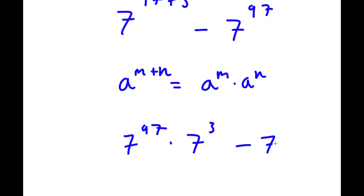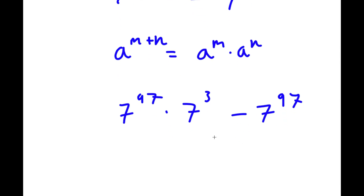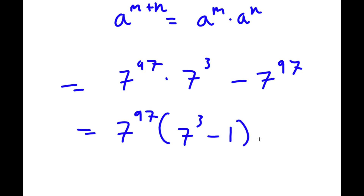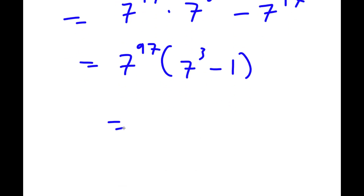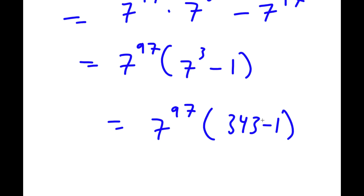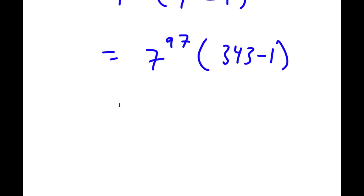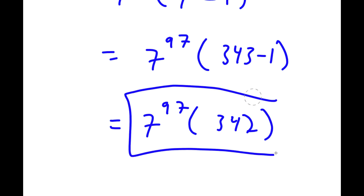Now I have this minus 7 to the power of 97. If I factor out 7 to the power of 97, I get 7 to the power of 97 times 7 to the power of 3 minus 1. Now 7 to the power of 3 is equal to 343. So I have 7 to the power of 97 times 343 minus 1, which equals 342. So my answer is 7 to the power of 97 times 342.